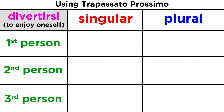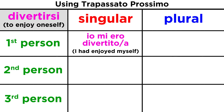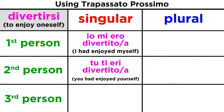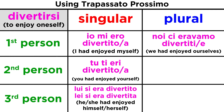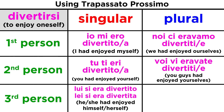Lastly, the third verb, divertirsi, is reflexive. All reflexive verbs take essere. Io mi ero divertito o divertita, tu ti eri divertito o divertita, lui si era divertito o lei si era divertita, noi ci eravamo divertiti o divertite, voi vi eravate divertiti o divertite.